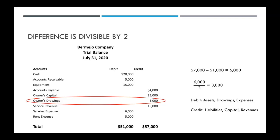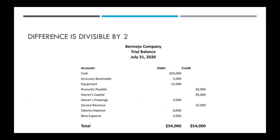However, assets, drawings, and expense accounts should all be debit balances. Liabilities, capital, and revenue accounts should be the ones on the credit side. So if we move that 3,000 for owner's drawings to the debit side like it's supposed to, we see now that our debits and credits equal.